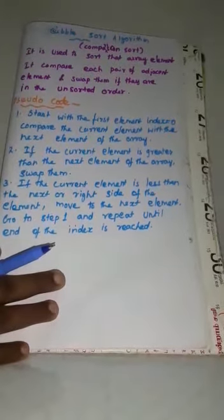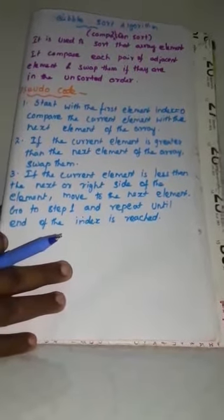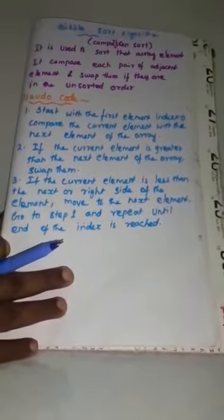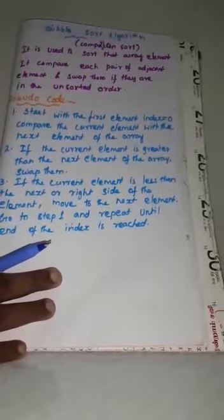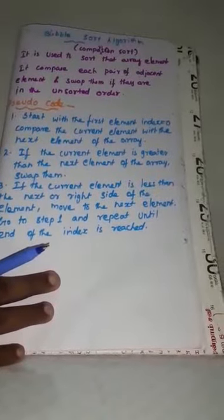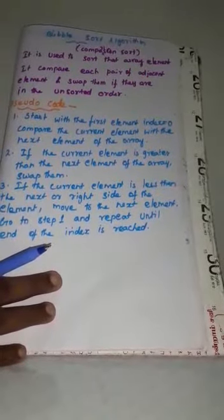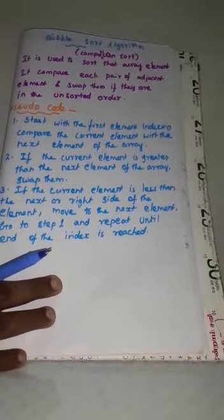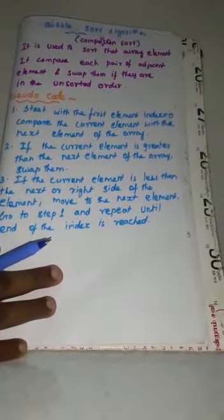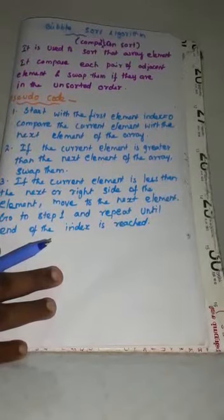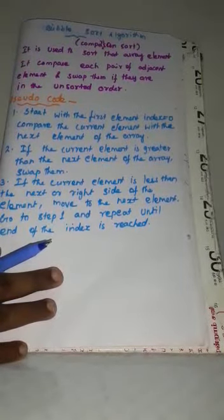Students, now we are going to discuss about 12th Standard Computer Science, Chapter 4, Topic Sorting Techniques. There are 3 types of sorting techniques: Bubble Sort, Insertion Sort, Selection Sort.